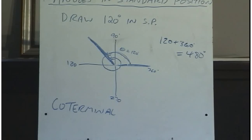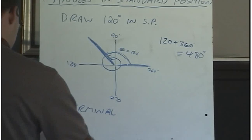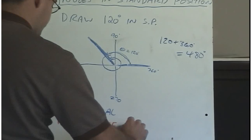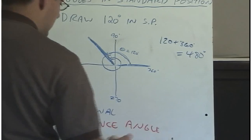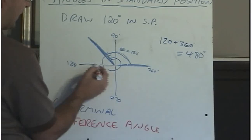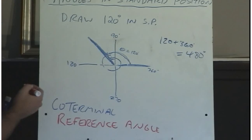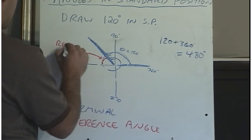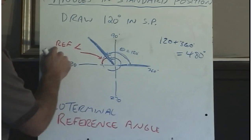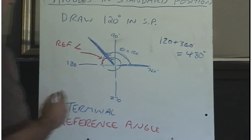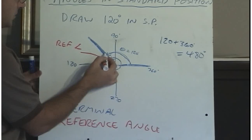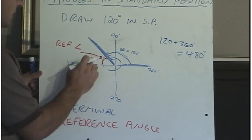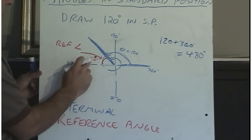Another term we need to know is a reference angle. The reference angle is defined to be the angle between the terminal arm and the x-axis, and it's always less than or equal to 90 degrees. For our 120-degree angle, the reference angle is this one right here. If from here to here is 120 degrees and all the way to 180 degrees, then what's missing must be 60 degrees — because 120 plus 60 makes 180. So the reference angle would be 60 degrees.